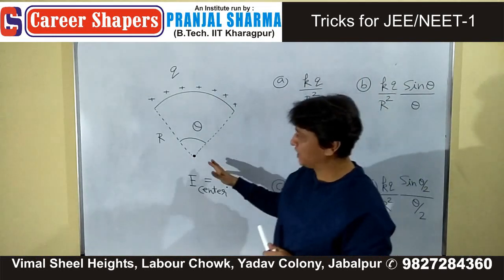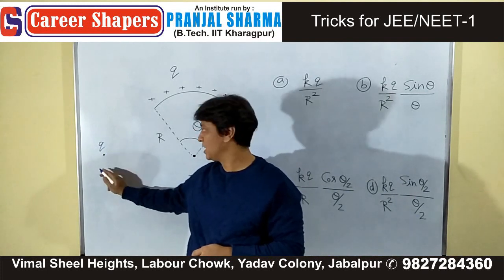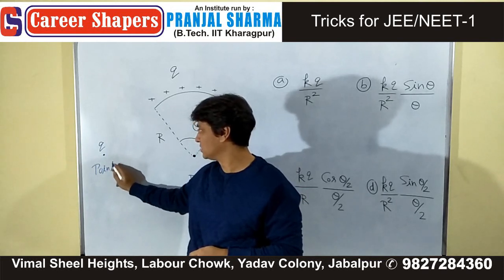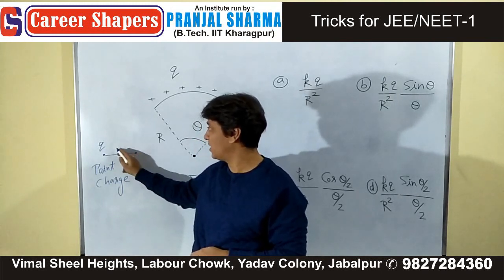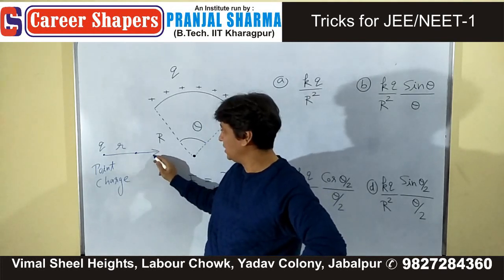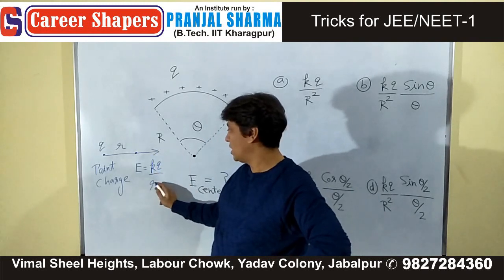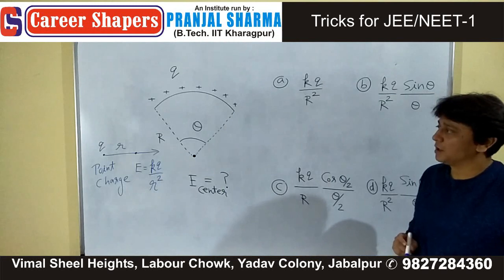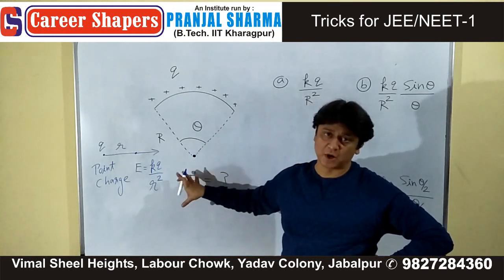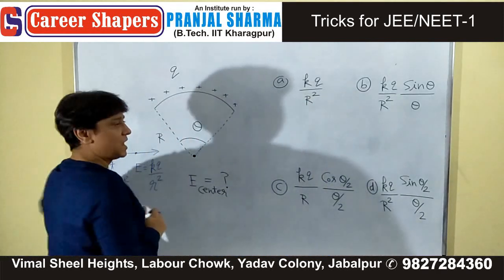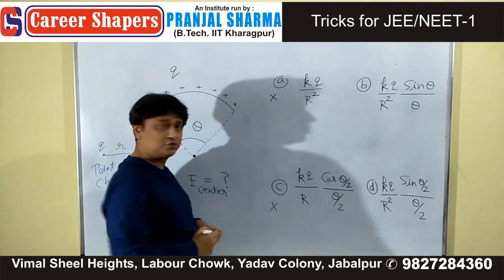First thing: electric field at this point. If Q is a point charge, then at a distance of R from it, electric field is given by KQ upon R square. If you remember this, then you can eliminate the first as well as the third options.